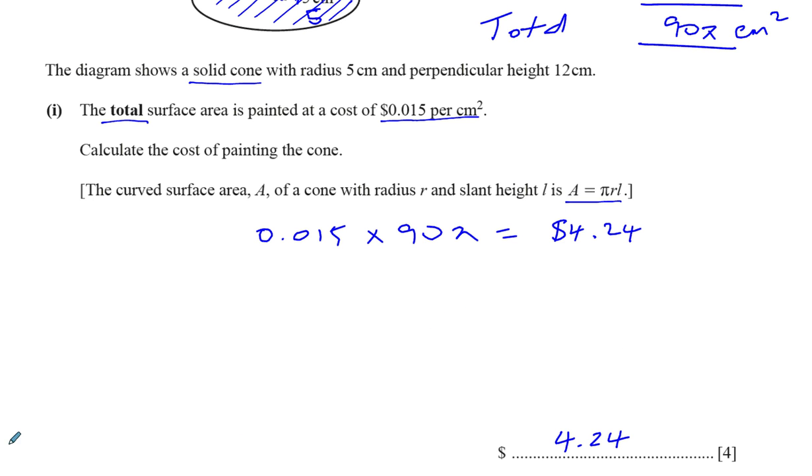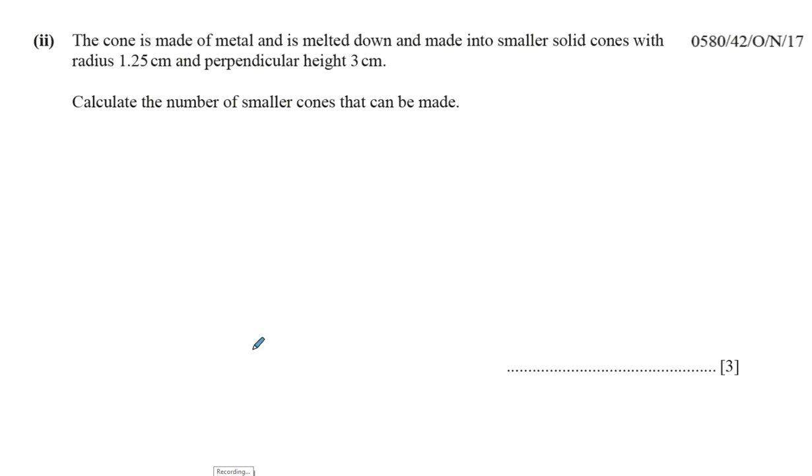I'll make part 2 now. Part B-2 says the cone is made of metal and is melted down and made into smaller solid cones with radius 1.25 centimeters and perpendicular height 3 centimeters. So the big cone, which had its vertical height as 12 and its base as 5, is melted down to make smaller cones whose radius is 1.25 and whose height is 3. You want to find how many small cones could be made from this big cone.